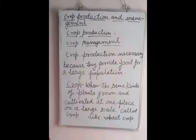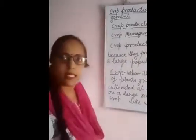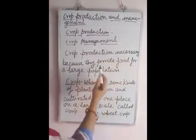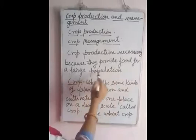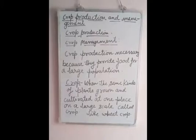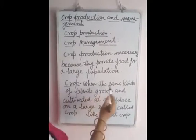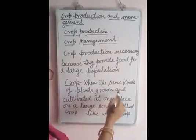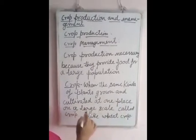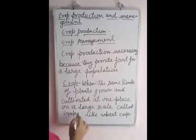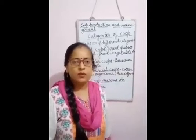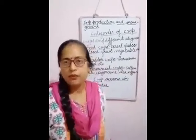Now the question arises: why is crop production necessary? Crop production is necessary because it provides food for a large population. So then what is a crop? When the same kinds of plants grow and are cultivated at one place on a large scale, it is called a crop — like the wheat crop, meaning a large number of wheat plants grown in a particular field.